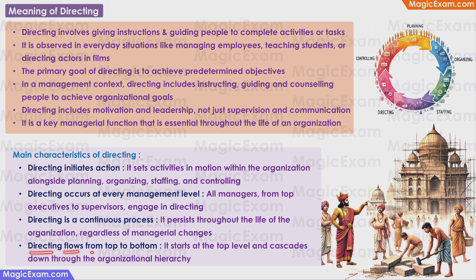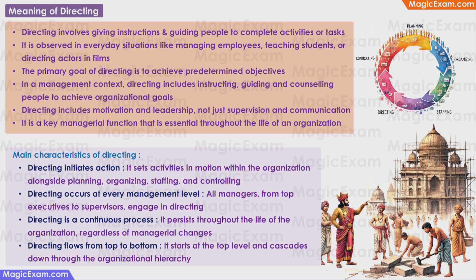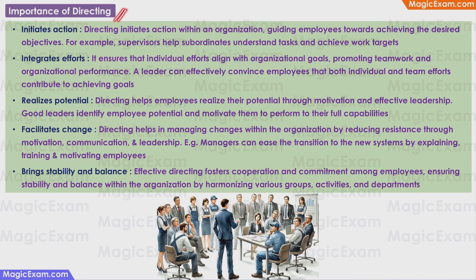Directing flows from the top to the bottom. It starts from the top level and cascades down through the organizational hierarchy. The top level management gives strategic directions to their subordinates, who give operational directions to their subordinates, and even the shop floor supervisors give task-level directions to the workers. So directions flow from the topmost parts of management down to the lowest level workers in the organization.